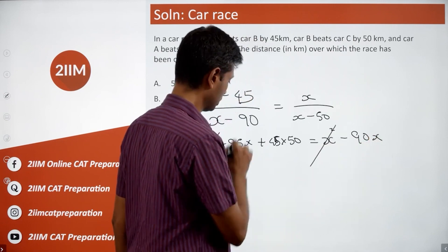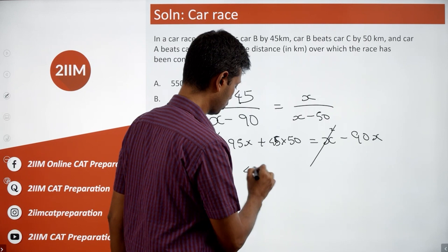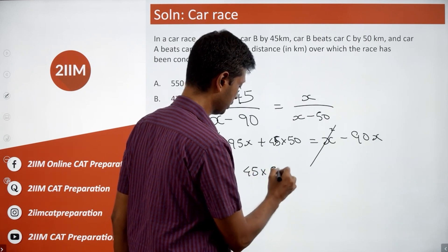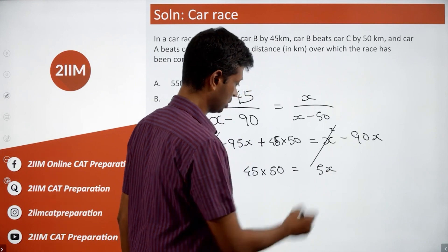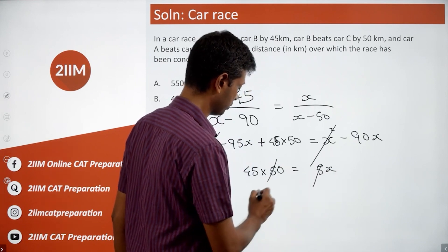This goes off. Take this 95 to that side, 45 into 50 is 95X minus 90X which is 5X, or X is 450 kilometers.